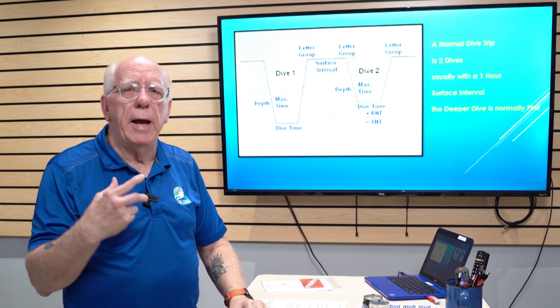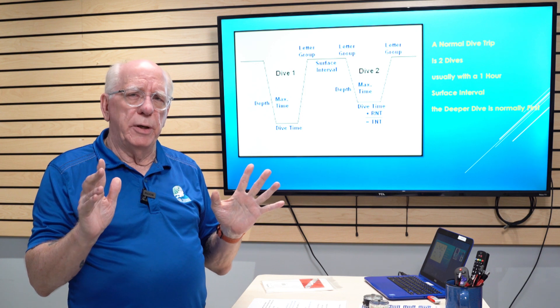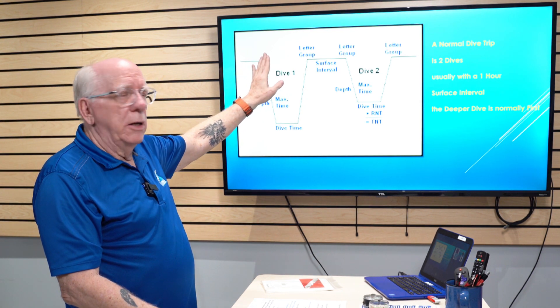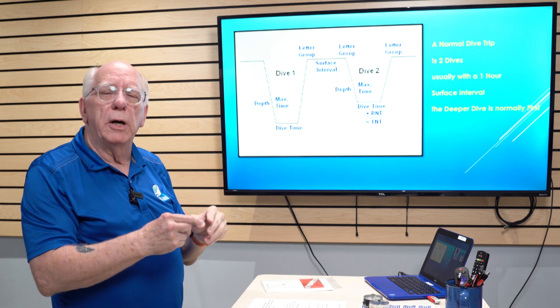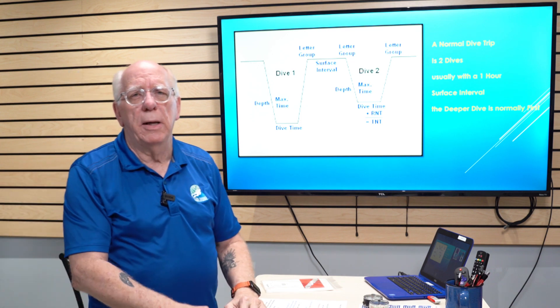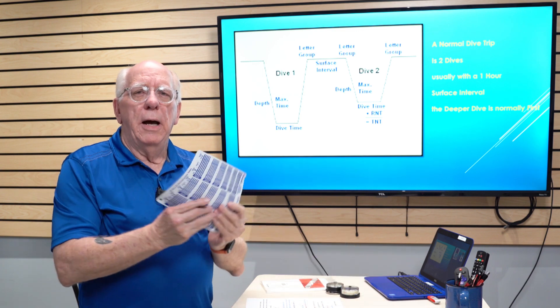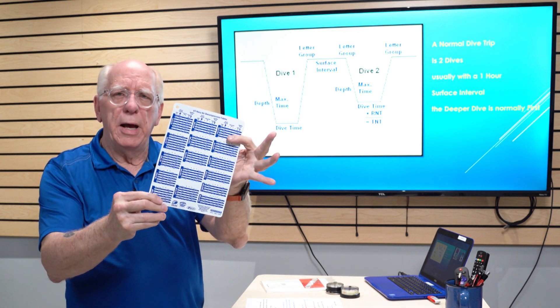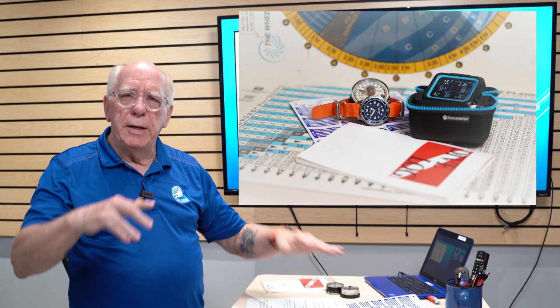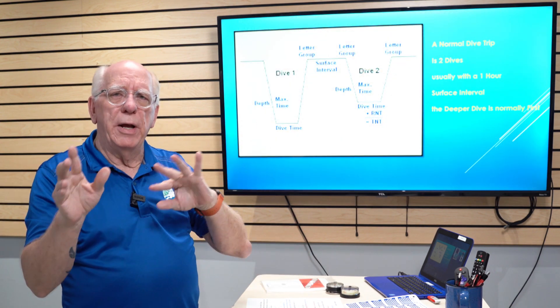In your computer, it basically has three phases it operates in. It operates in pre-dive or dive planning mode, where you can figure out exactly what your no decompression limit is. That decompression limit in your computer comes from a set of dive tables — the SDI dive tables, the Navy dive tables, the PADI RDP Recreational Dive Planner, and the old PADI wheel. Everything is interconnected and transferred into your computer.